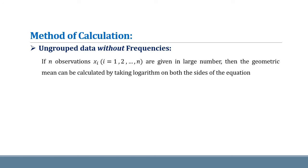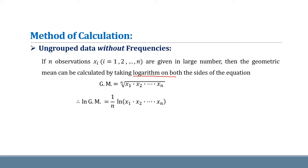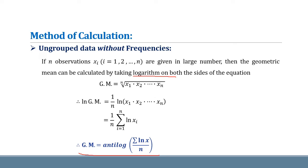If n observations xi are given in large number, the geometric mean can be calculated by taking logarithm on both sides of the equation. The geometric mean equals the nth root of the product of all the observations. We then make simplifications using properties of logarithm to obtain the desired formula. In the last step, we take the antilog of the summation of log x upon n to obtain the geometric mean when ungrouped data without frequency is given in large number.